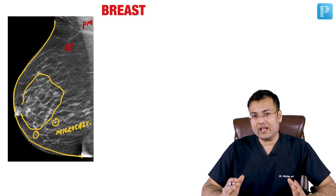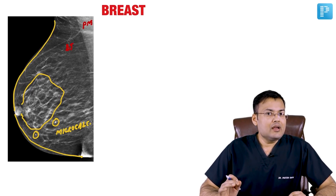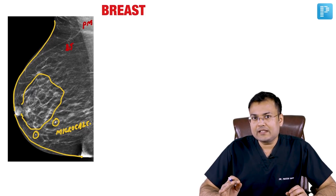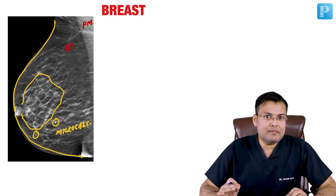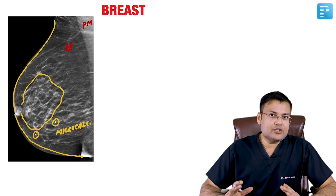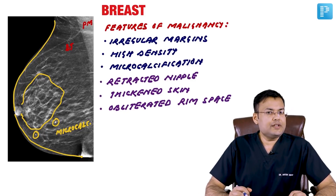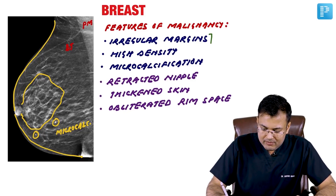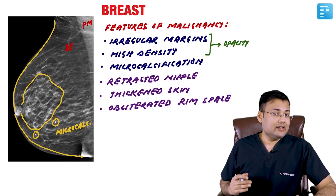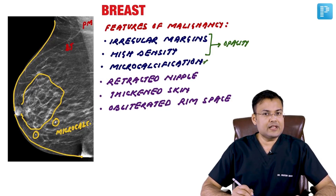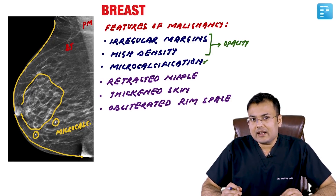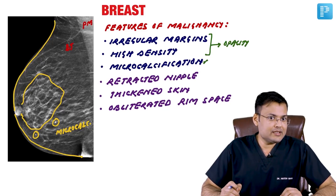Microcalcification is another finding suggestive of malignancy. In microcalcification, the size of calcification is less than 0.5 mm. On the basis of these findings it is suggestive of malignancy. Features of malignancy on mammography: opacity with irregular margin and high density, presence of microcalcification.